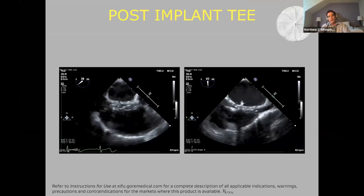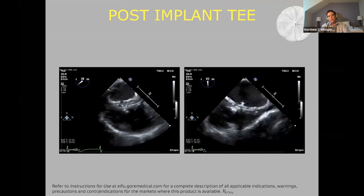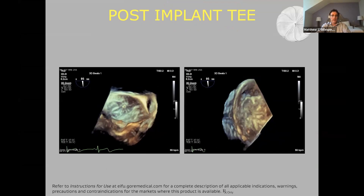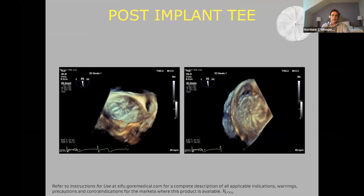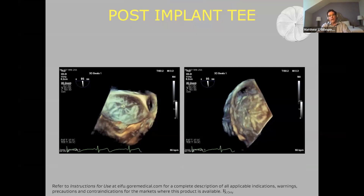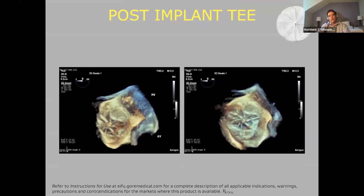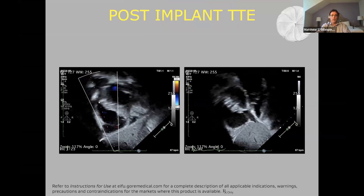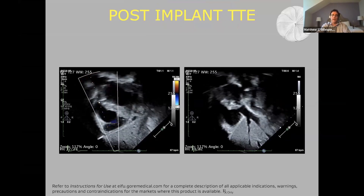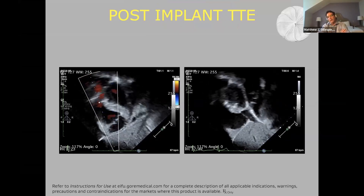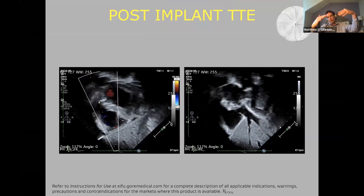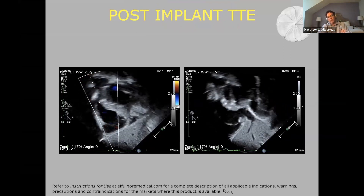This is what it looks like by the rest of the TEE. We also have some 3D images here — the echo people love this. The LA disc is on the left-hand panel and the RA disc is on the right. It's a very nice result for this patient. This is what it looks like by transthoracic echo the next day — you can see the device right in the septum, still looking like it's bowing slightly from LA to RA in plane with the atrial septum.